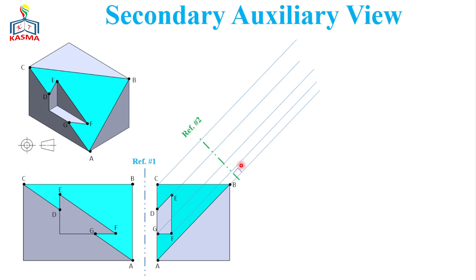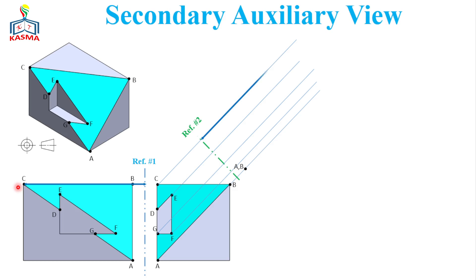Now measure from Reference 1 into the front view and transfer the dimensions into the auxiliary plane. Measuring from the reference to point A gives a certain measurement, and the same distance applies to point B — they are at the same distance and aligned on the same extension line. Then measure from the reference to point C, transfer that dimension using reference point 2, and place point C at the corresponding position.